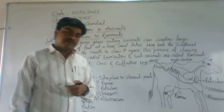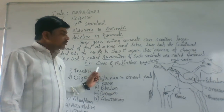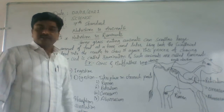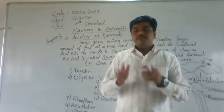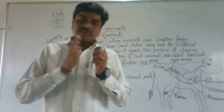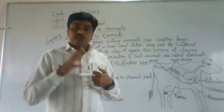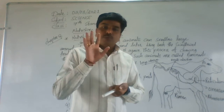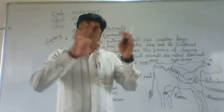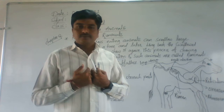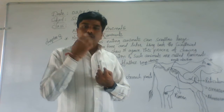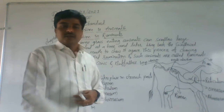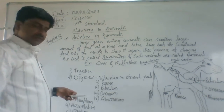The best examples of ruminants are cows and buffaloes. Cows and buffaloes are commonly called ruminants because they have a special part in their body called the rumen. Because of this special part, these animals are called ruminants. They follow the same five steps: ingestion, digestion, absorption, assimilation, and egestion.